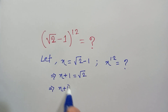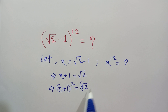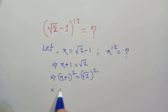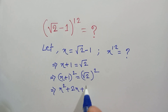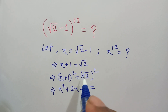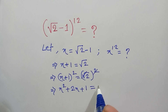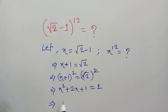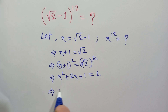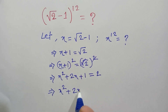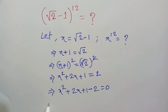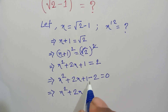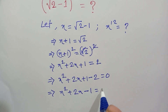Now we will square both sides: (x + 1)² = (√2)². This gives x² + 2x + 1 = 2. Moving the 2 to the left side: x² + 2x + 1 - 2 = 0, which is x² + 2x - 1 = 0.